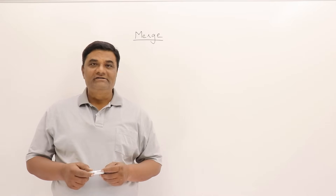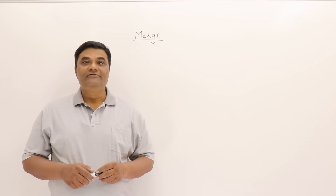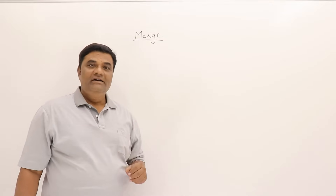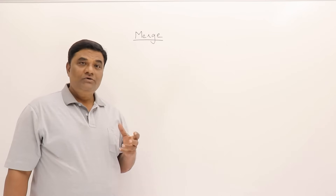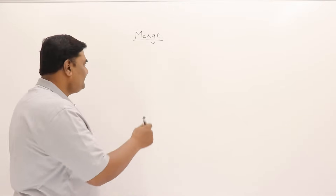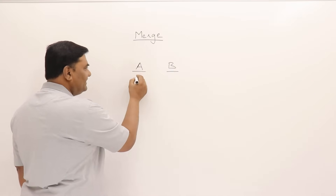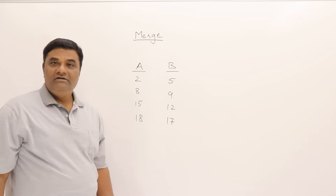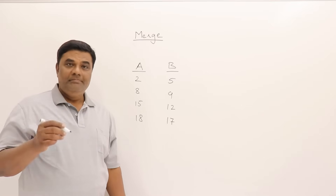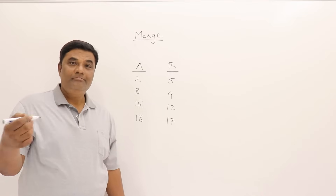The topic is merge sort. To understand merge sort, we first need to know what merging is. Merging is a process of combining two sorted lists into a single sorted list. If I have two lists — list A and list B — with some set of elements, they can be of equal or different sizes, but they must be sorted.